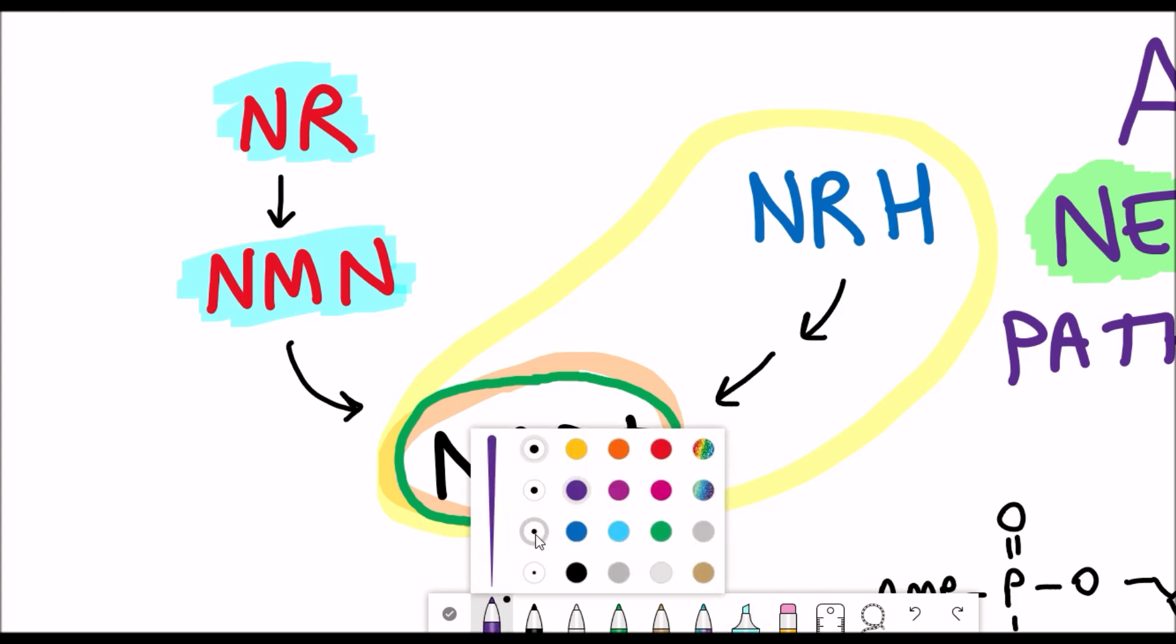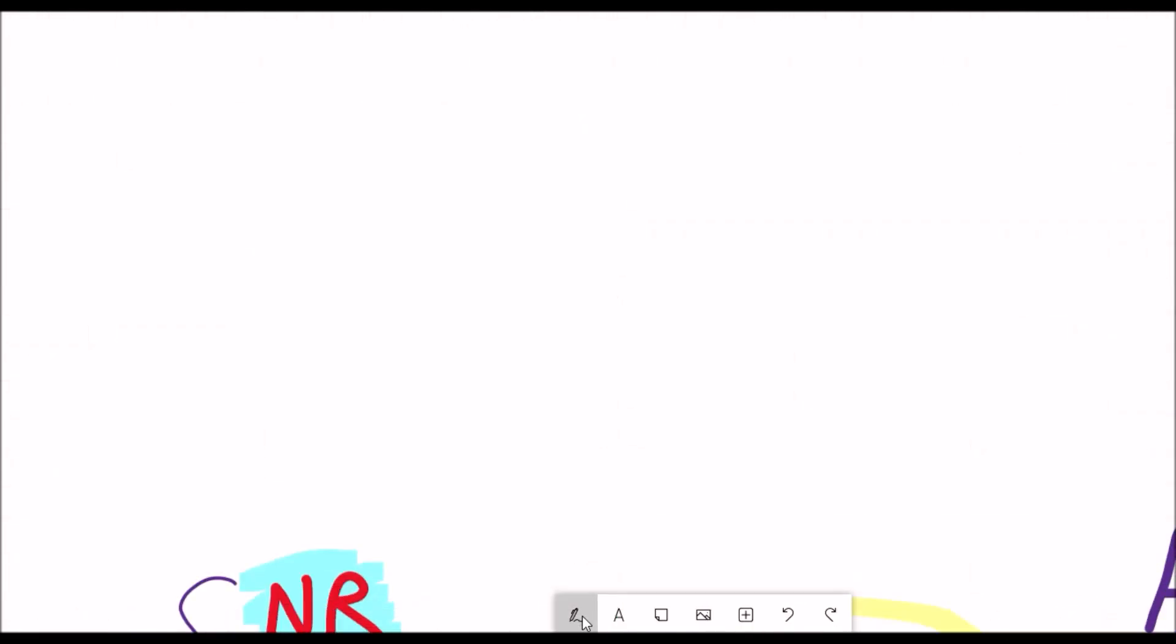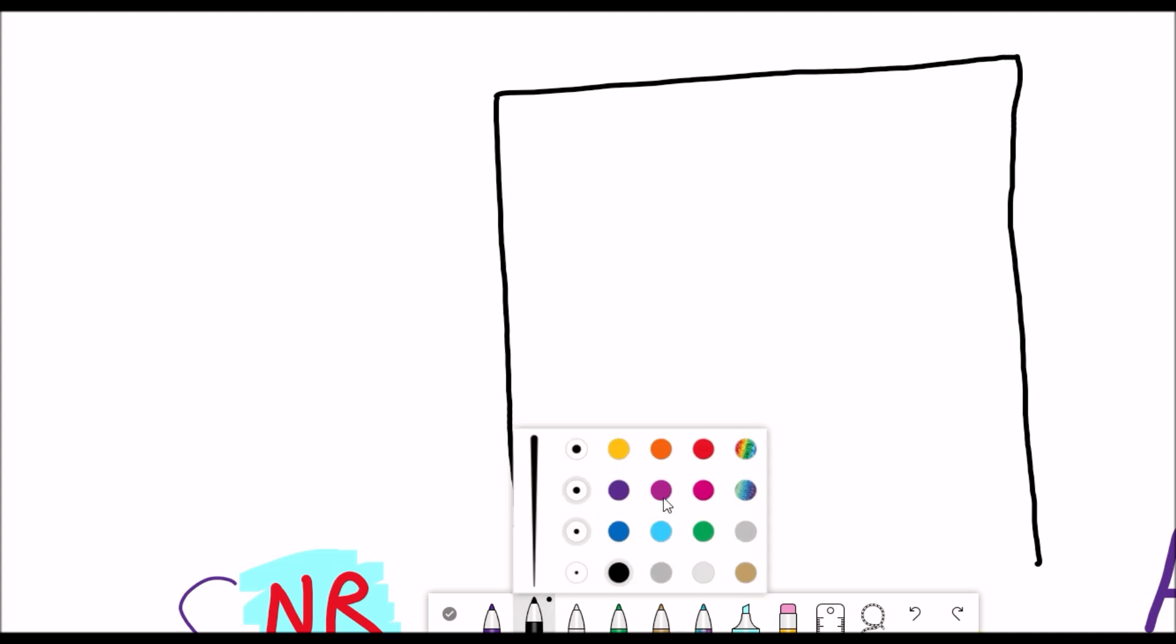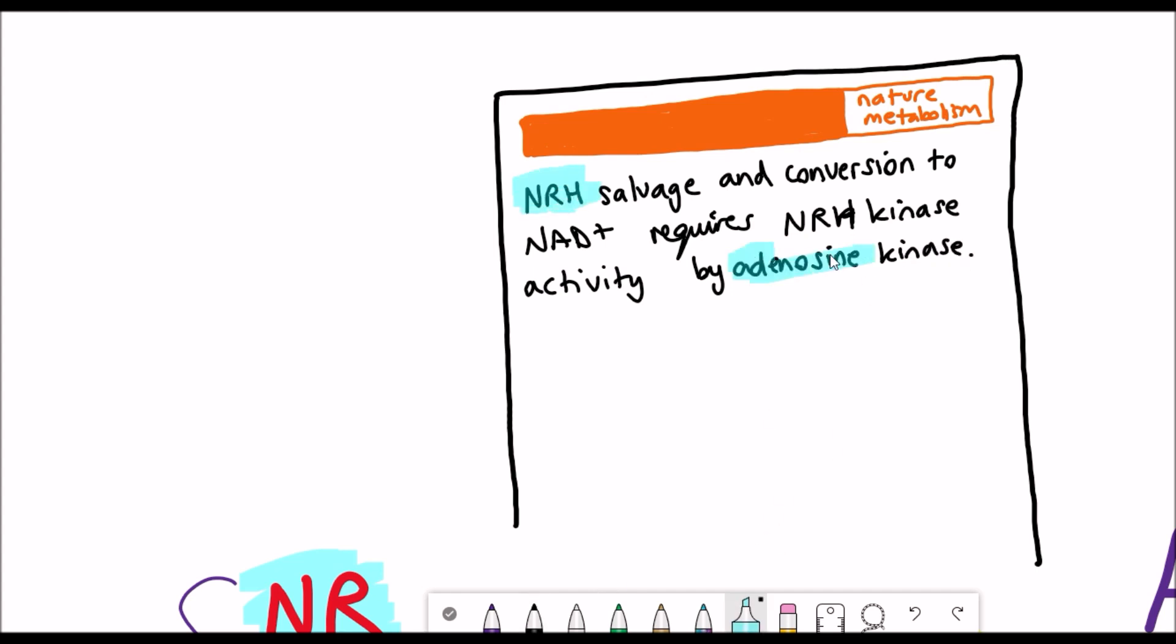Most of what I'll be talking about today comes from a recent publication in Nature Metabolism that showed this new pathway, or at least investigated how this precursor NRH can be converted into NAD plus and revealed that one of the critical enzymes involved in this process is adenosine kinase. Now if that went over your head, we'll break it down and go through it step by step in this video and explain what all of this means and why it could be interesting.